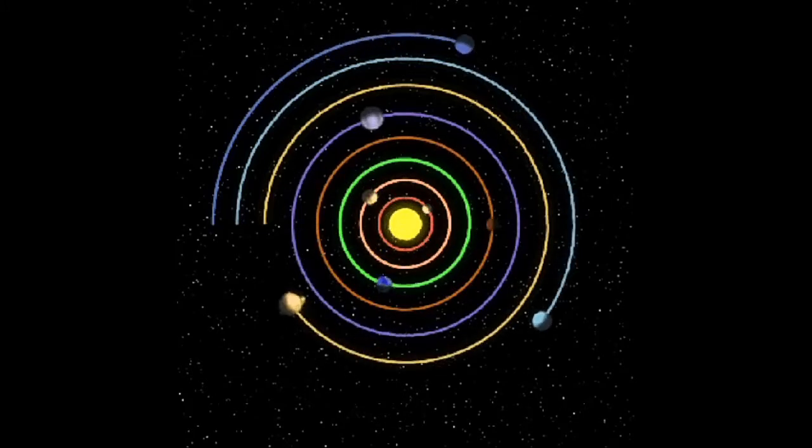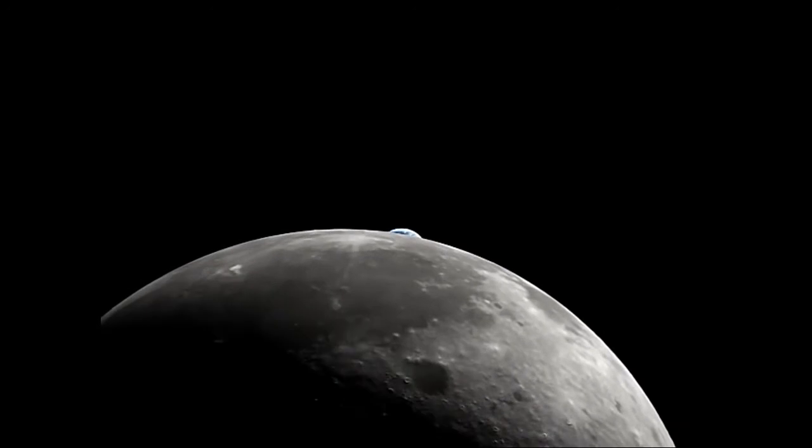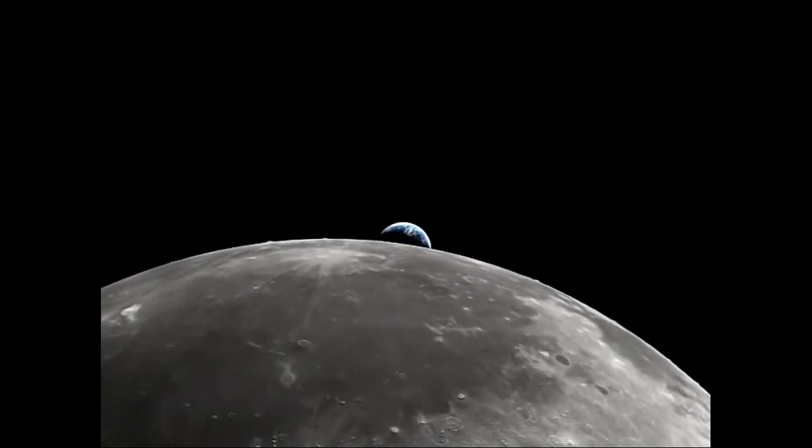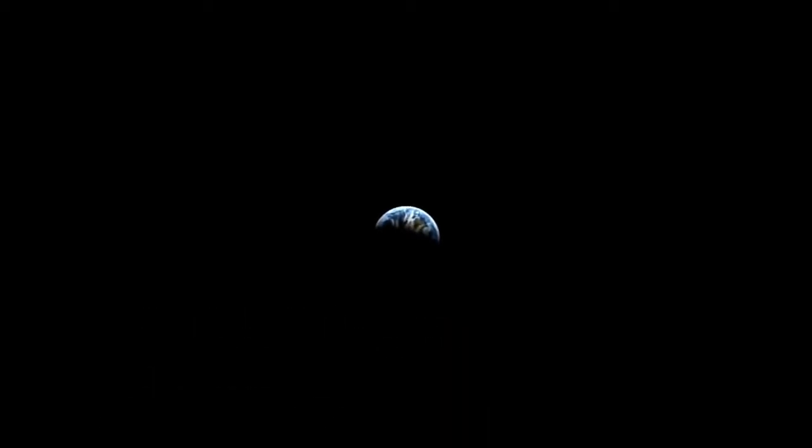An orbit is essentially a path of constant free fall. For example, the moon is falling toward Earth. However, it also has an orbital speed from the momentum gained during its formation that allows it to fall around the Earth with a trajectory that follows the same curve as Earth's surface.